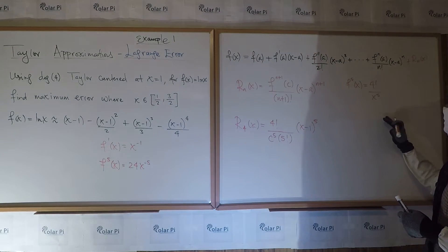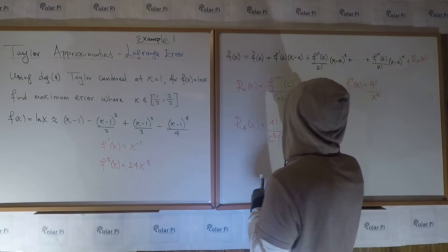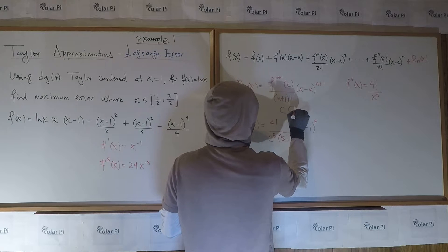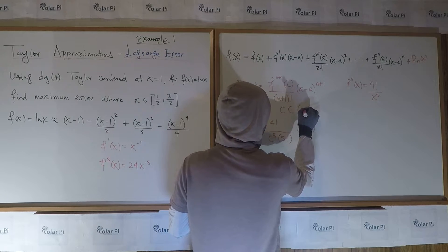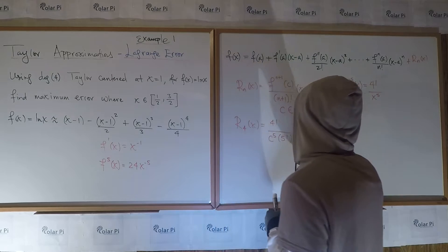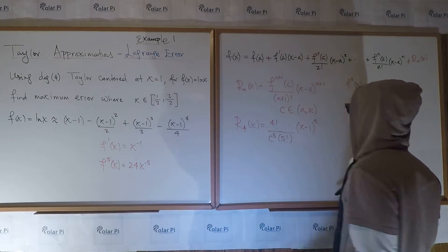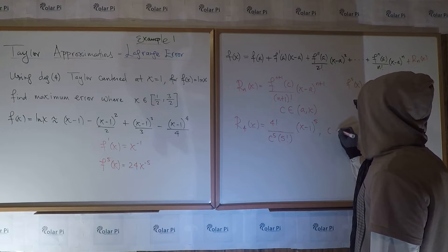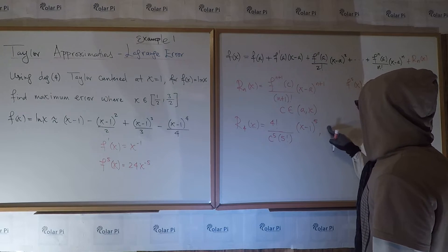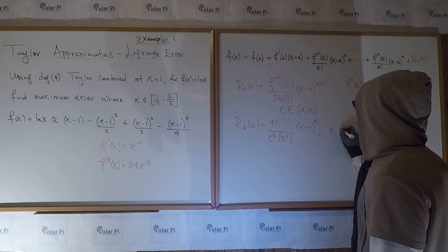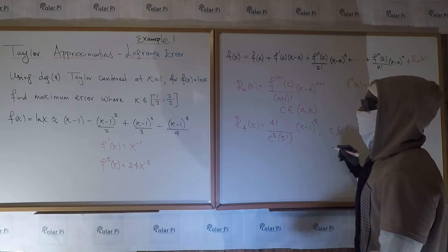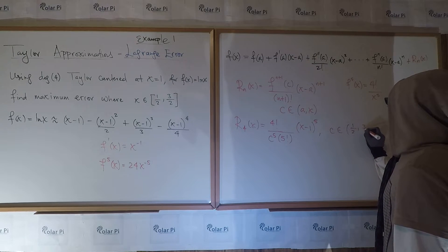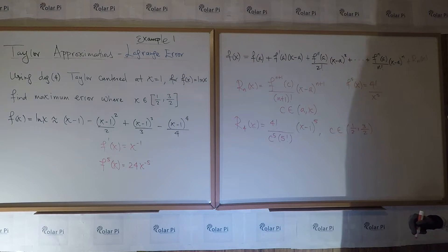And one thing I did not write, and that's important to note, is that c, this c here which you're probably wondering about, is in the open interval a to x, where a is the center and x is like the x's you're given. So for us, c is then going to have to be in the open interval one-half comma three-halves. It's going to be in here.